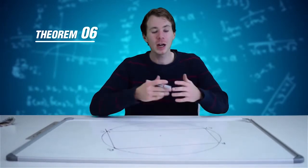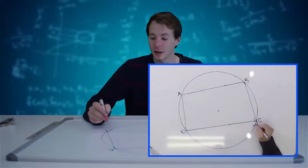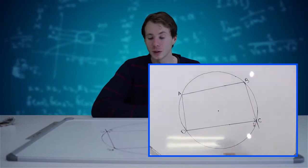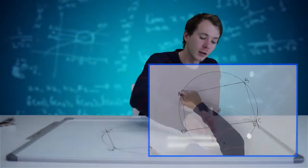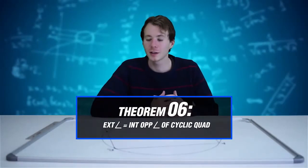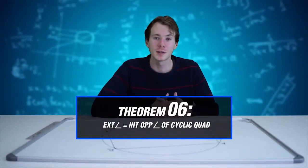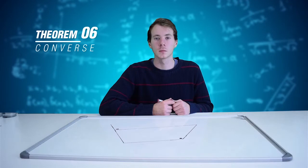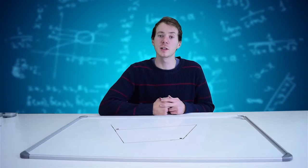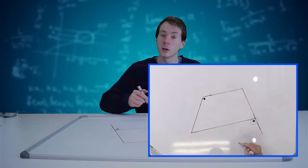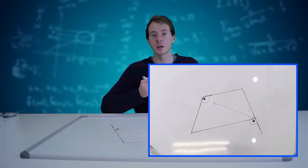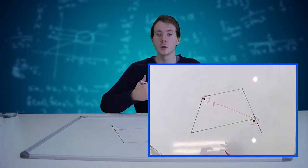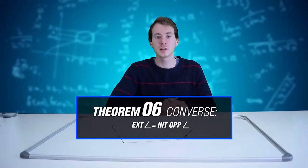Theorem 6 states that when I have a cyclic quadrilateral, the exterior angle C2 is going to be equal to the interior opposite angle A. The reason is: exterior angle is equal to the interior opposite angle of a cyclic quad. Theorem 6's converse states that if I have a quad and its exterior angle is equal to its interior opposite angle, then this quad is going to be cyclic. The reason is: exterior angle is equal to interior opposite angle.